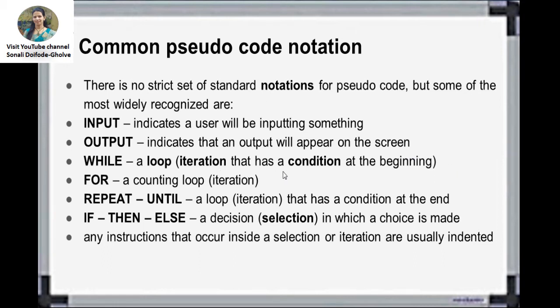WHILE is a loop or iteration that has a condition at the beginning. FOR is used for counting — it is also used for iterations. You can use WHILE, FOR, or REPEAT-UNTIL. REPEAT-UNTIL is a loop with the condition at the end — it is a loop with the condition checked at the end, whereas FOR is a counting loop.